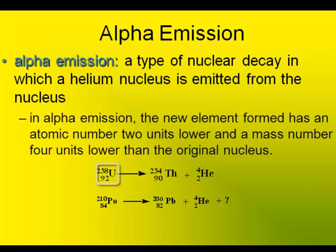What's on the left side is what we begin with. So uranium-238 transforms itself into thorium-234, and when it does that, it spits out a helium nucleus. The next example: polonium-210 becomes lead-206 when the polonium emits, or spits out, an alpha particle. It also emits a gamma ray.